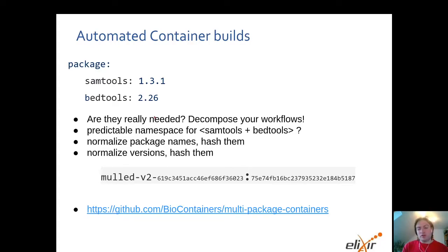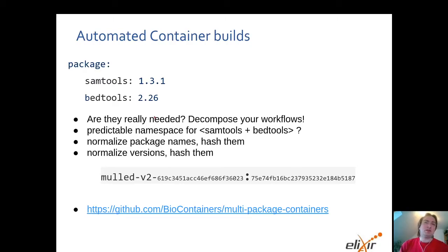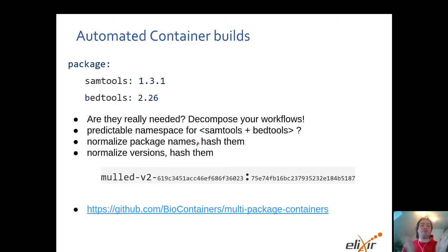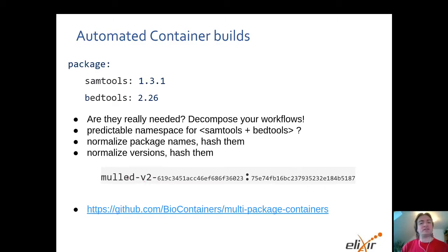You can easily imagine that if you want a container with 10 tools inside, it's nearly impossible to have a meaningful name that everyone can guess beforehand. Ideally, we don't want to search for containers — we want automatic systems like workflow engines to create the name a priori and just fetch the container. So what we do is normalize the package names, order them in a specific order, and hash them. We do the same for versions, normalizing and hashing them, resulting in a naming scheme — essentially a hash version that we can improve over time — and this is the container name you get.